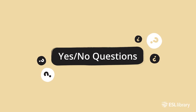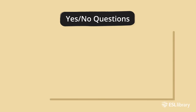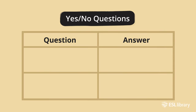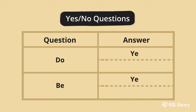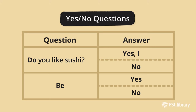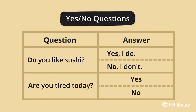What are yes-no questions in English? Yes-no questions usually start with 'do' or 'be.' The answer to these questions is usually yes or no. For example: 'Do you like sushi?' — 'Yes, I do.' or 'No, I don't.' 'Are you tired today?' — 'Yes, I am.' or 'No, I'm not.'